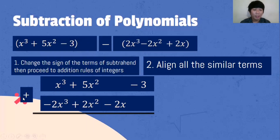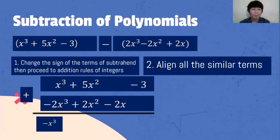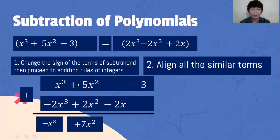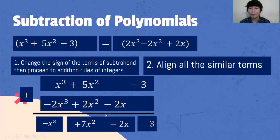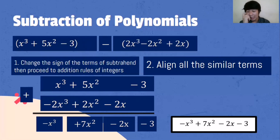1x cubed plus negative 2x cubed — different signs, so we subtract and follow the sign of the higher absolute value: negative 1x cubed. Then 5x squared plus positive 2x squared — same sign, so we add: 7x squared. Bring down negative 2x and bring down negative 3. So our final answer is negative x cubed plus 7x squared minus 2x minus 3.